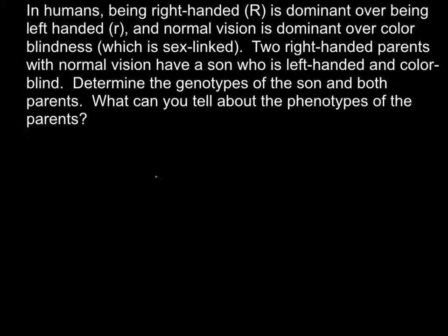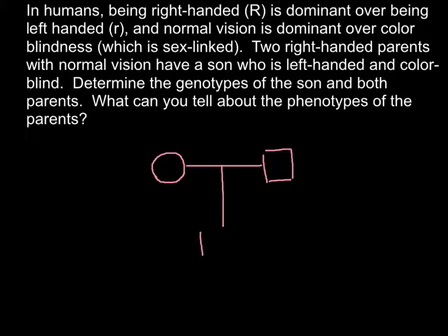Here, a circle stands for the mother and a square for the father of the child, and here is the child — and we know this is a male, so a square. We know that the parents are right-handed, so we can put capital R for each parent and leave a blank space for the second allele, since we don't yet know whether that allele is dominant or recessive.